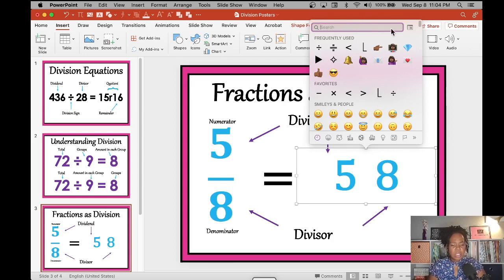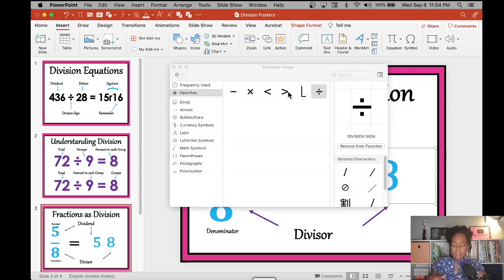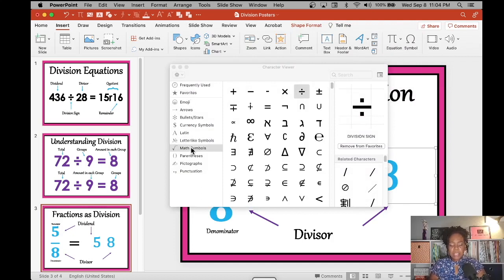So I'm going to go up to the top here where it has that little menu button icon. And I'm going to look for the math symbols tab over on the left side. And I'm going to find the symbol that I need, which is the division sign. Click on that.